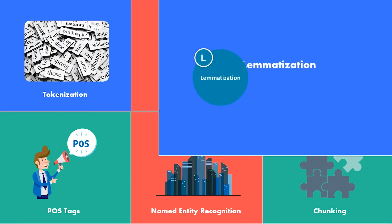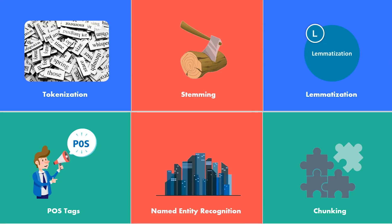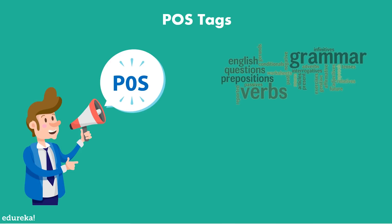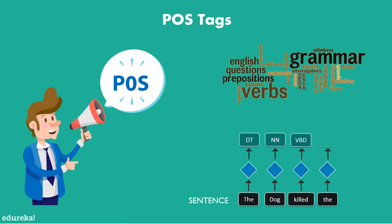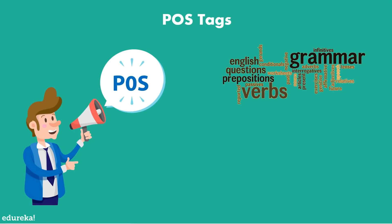Once we have tokens divided into their root form, next come POS tags. The grammatical type of a word is referred to as a POS tag, or part of speech — be it verb, noun, adjective, adverb, article, and many more. It indicates how a word functions in meaning as well as grammatically within a sentence. A word can have more than one part of speech based on the context in which it is used. For example, in the sentence 'Google something on the internet,' 'Google' is used as a verb, although it is a proper noun.